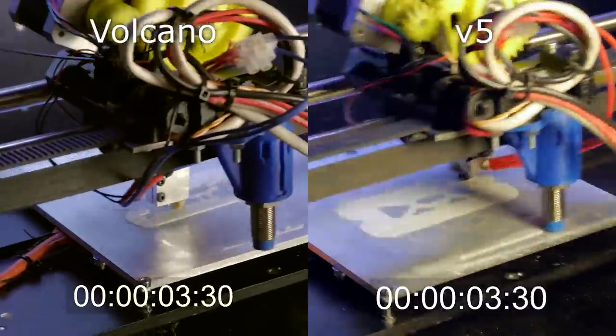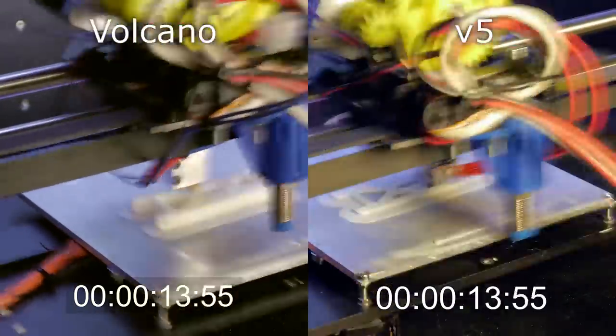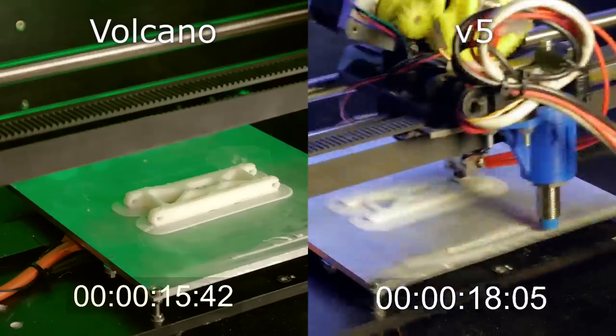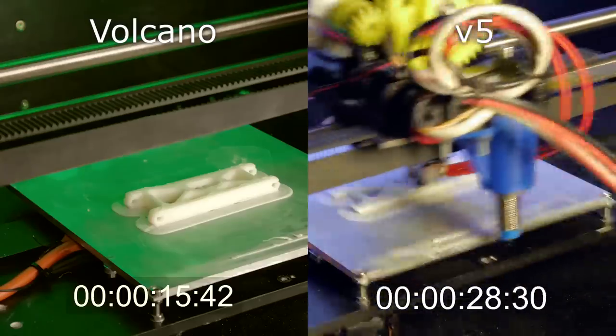Not only is the actual printing stupid fast, I mean, look at this, this is the same part and the Volcano just sped it out like it was nothing. Okay, it only used like 15 layers for the entire part, but that is kinda like the point of the entire thing.